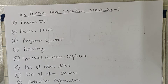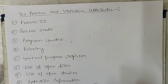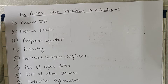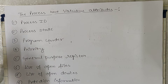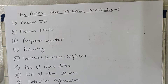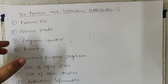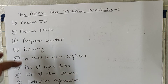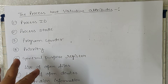A process has various attributes. Just like humans have an Aadhaar ID and an address, a process also has attributes like a process ID — each process has its own unique ID. Process state means which state it is currently in: new state, ready state, etc. I will explain process states in the next tutorial. The process state tells us whether the process is in the ready queue or currently executing on the CPU.